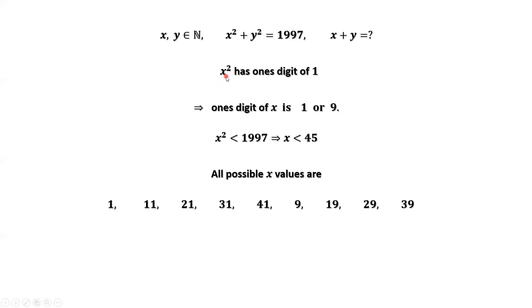Therefore, x squared has one's digit of 1. What is the one's digit of x? One's digit of x is 1 or 9, because 1 squared is 1. 9 squared is 81. The one's digit of 81 is 1.